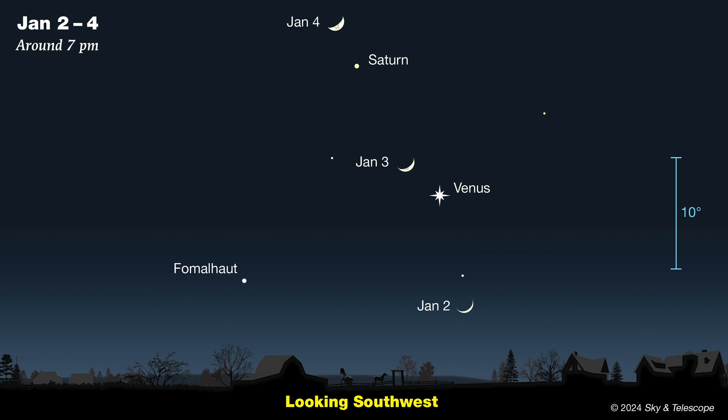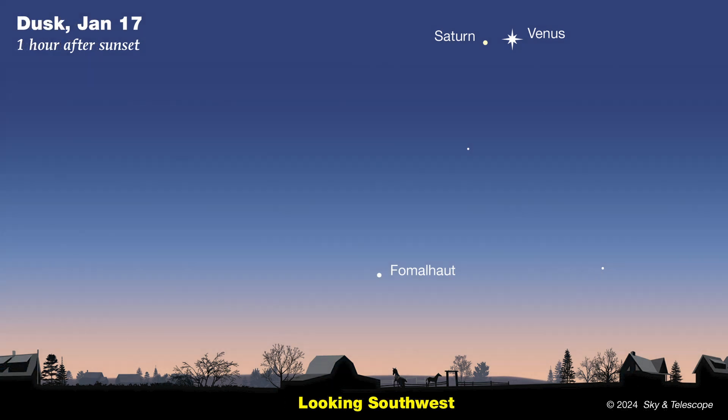Saturn isn't far from Venus, though it is much, much fainter. Clench your fist and hold it out at arm's length. You'll find Saturn about one fist to the upper left of Venus in early January. But they move closer together as the days go by, and by mid-month they're just a couple of degrees apart. After that, Saturn will drift farther down toward the horizon.